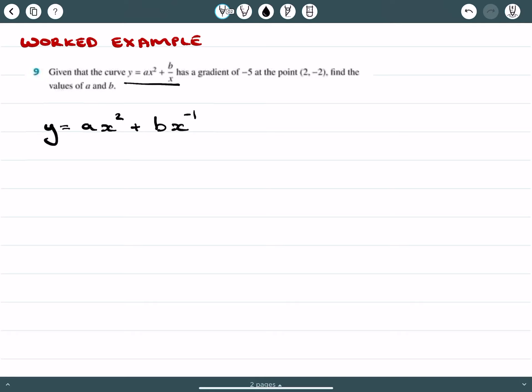This makes it easier to establish what dy/dx is going to be. dy/dx equals 2ax minus bx to the negative 2, which I can rewrite as 2ax minus b over x squared.